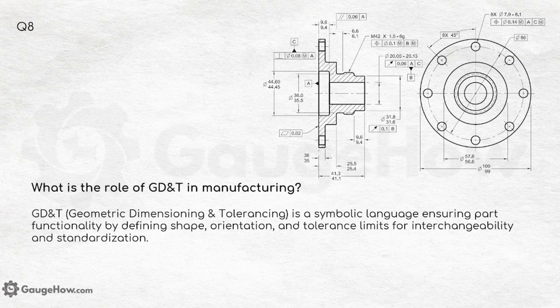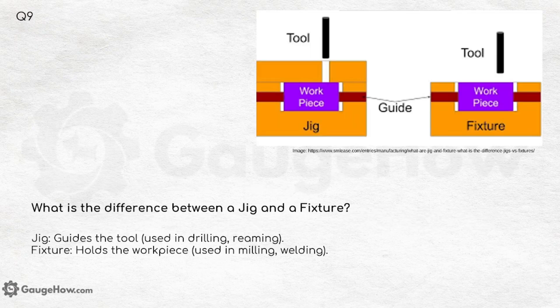What is the role of GD&T in manufacturing? GD&T — Geometric Dimensioning and Tolerancing — is a symbolic language ensuring part functionality by defining shape, orientation and tolerance limits for interchangeability and standardization.